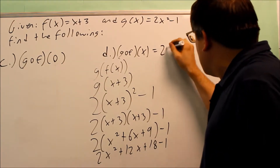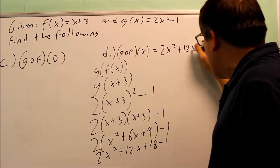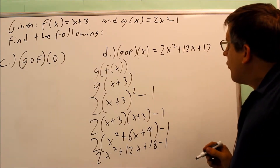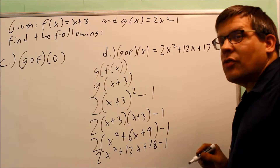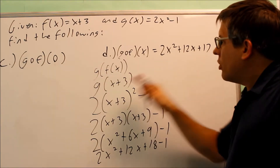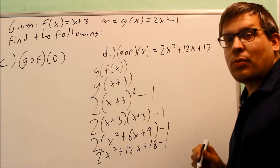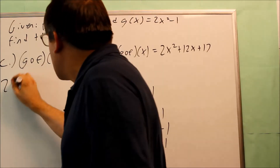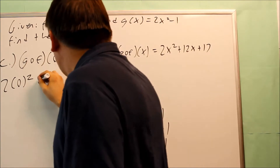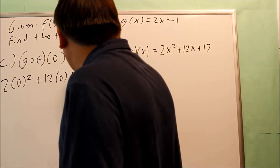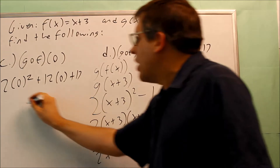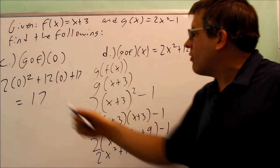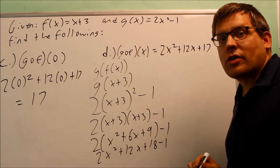My final answer for g of f of x is 2x squared plus 12x plus 17. Now I'm going to use this to go back and answer part c. I need to put 0 into this expression: 2 times 0 squared plus 12 times 0 plus 17. The first two terms cancel out and you're left with 17. So g of f of 0 is 17, and g of f of x is 2x squared plus 12x plus 17.